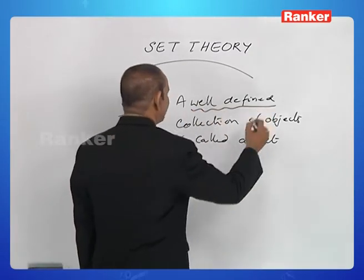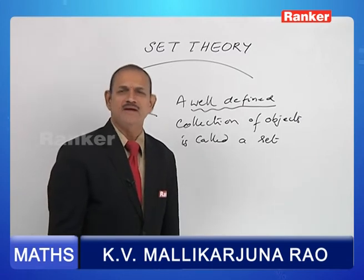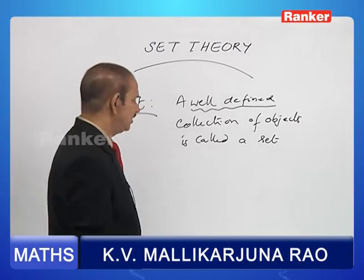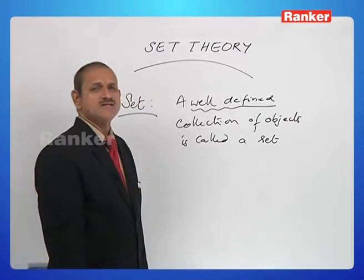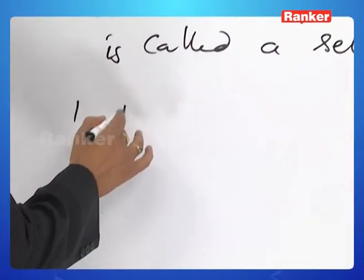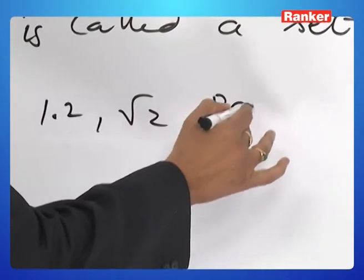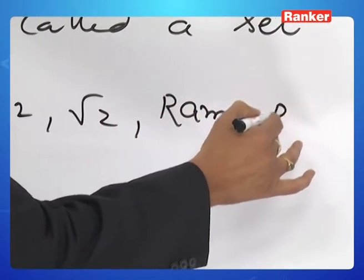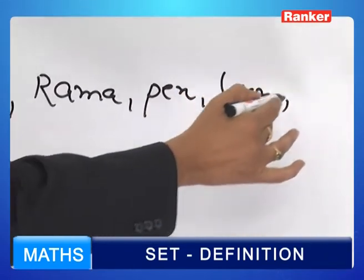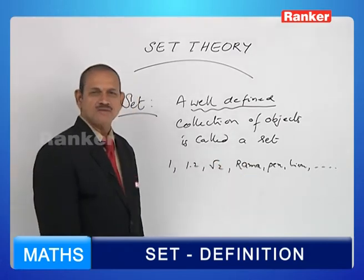What can you mean by the word 'well-defined'? When can you say that a particular collection is well-defined, and when can you say that it is not well-defined? It will be very clearly understood if you go through some examples. Look at this collection: 1, 1.2, root 2, Rama, Pen, Lion, etc. What type of collection can you say about this?